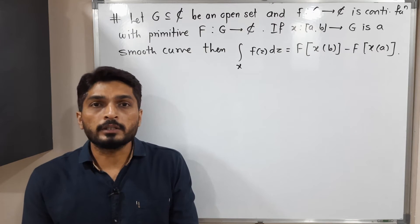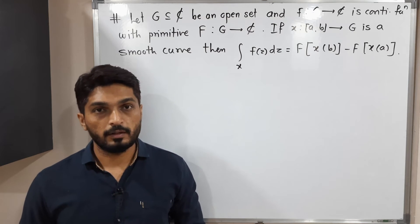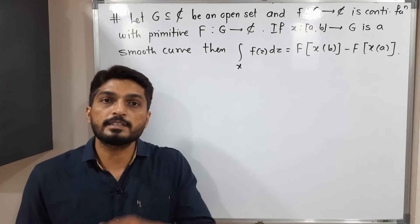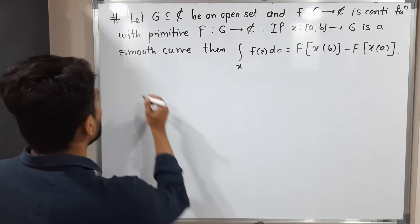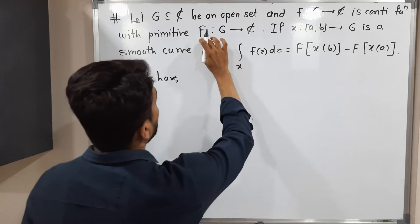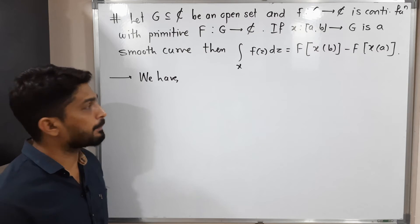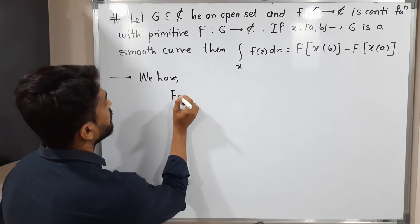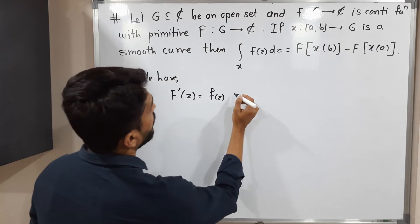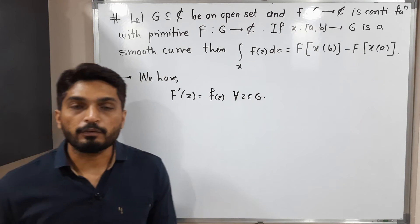The very important given information is that capital F is a primitive of small f, or equivalently, small f is the derivative of capital F. Therefore we can write F'(z) = f(z), and this is true for all z belonging to G. This is a very important piece of information.